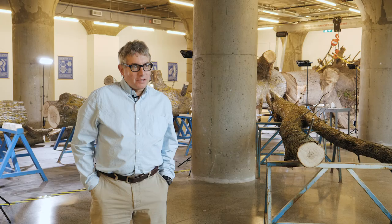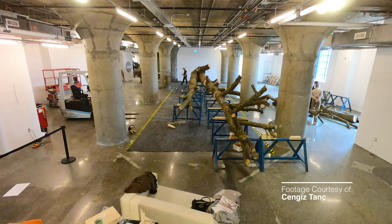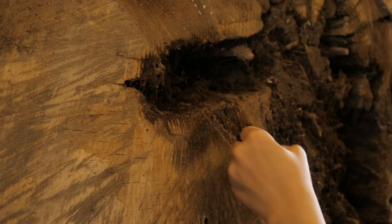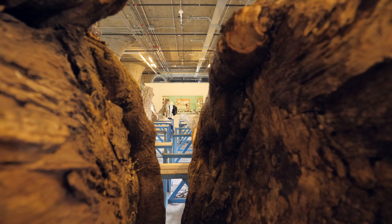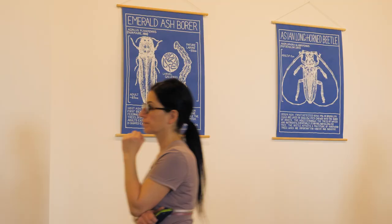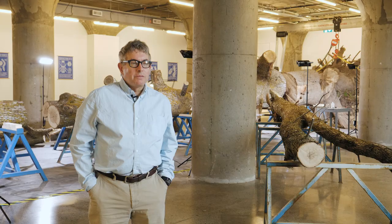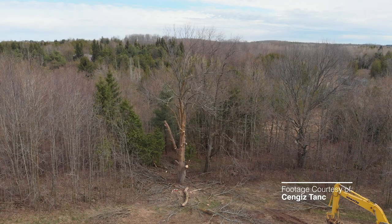This exhibition is called Life of a Dead Tree and it's a project in which we've brought an enormous dead ash tree into the galleries here at MOCA. Throughout the exhibition the tree will be examined to find out what organisms live inside the tree, and we're especially interested in an organism called the emerald ash borer, which is probably the organism that has killed this tree.